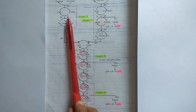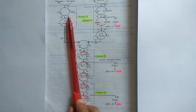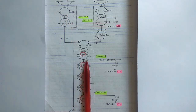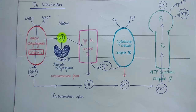In complex 2 there is no ATP synthesis. Thus the oxidation of FADH2 leads to the formation of only 2 ATP molecules. The mechanism of mitochondrial ATP synthesis is based on the chemiosmotic hypothesis proposed by Peter Mitchell, which explains the coupling between mitochondrial electron transport and ATP synthesis.